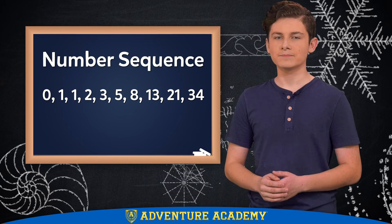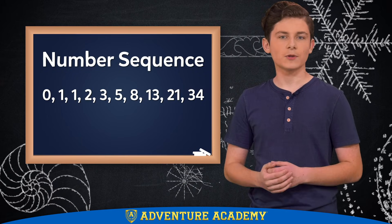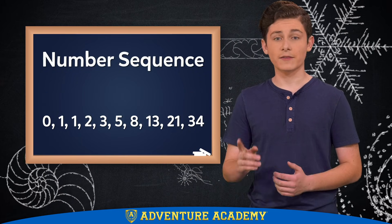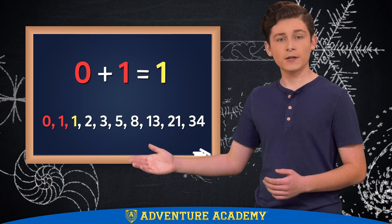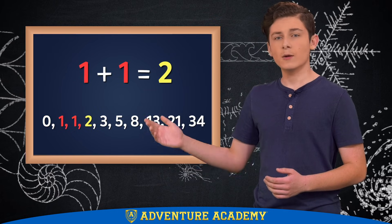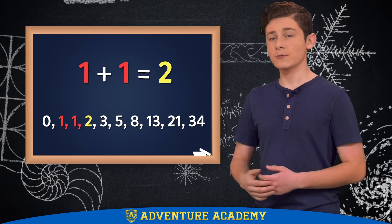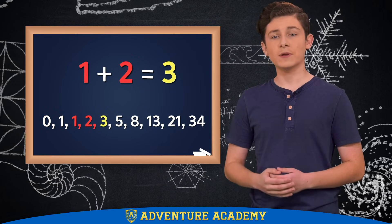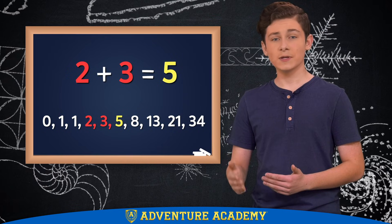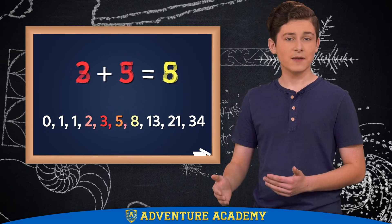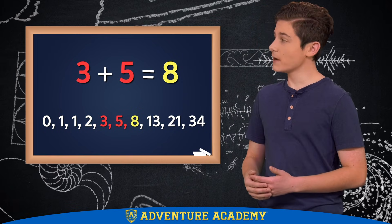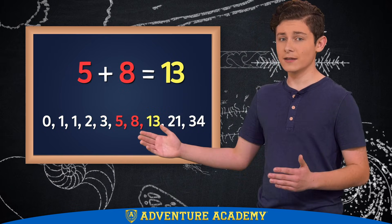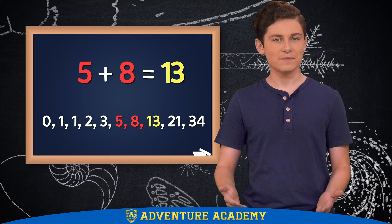Do you see a pattern? Well, look what happens when you add up the numbers like this. Zero plus one equals one. One plus one equals two. One plus two equals three. Two plus three equals five. Three plus five equals eight.